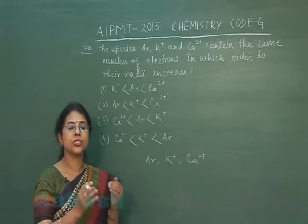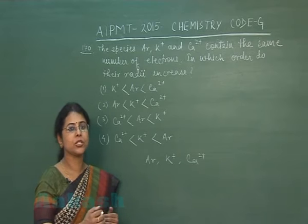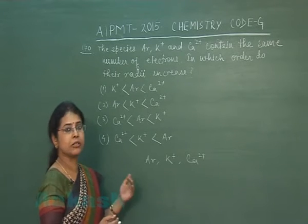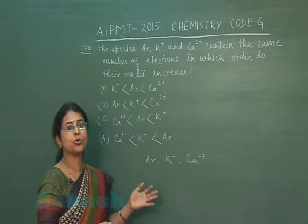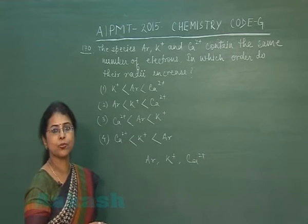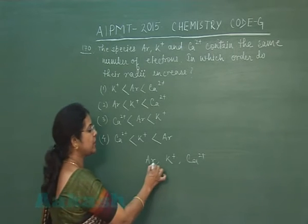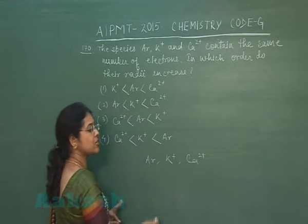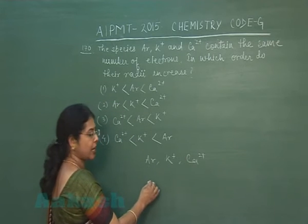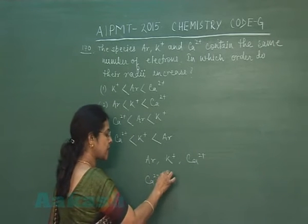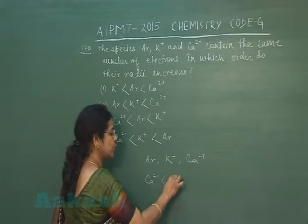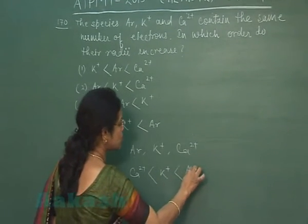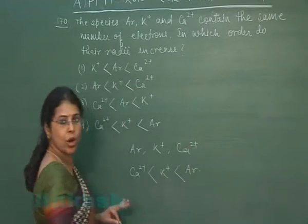The cation with the most positive charge will have the smallest radii. Among these three ions, Ca²⁺ has the highest charge, so Ca²⁺ will have the smallest size. Then comes K⁺, and the largest one is Argon.